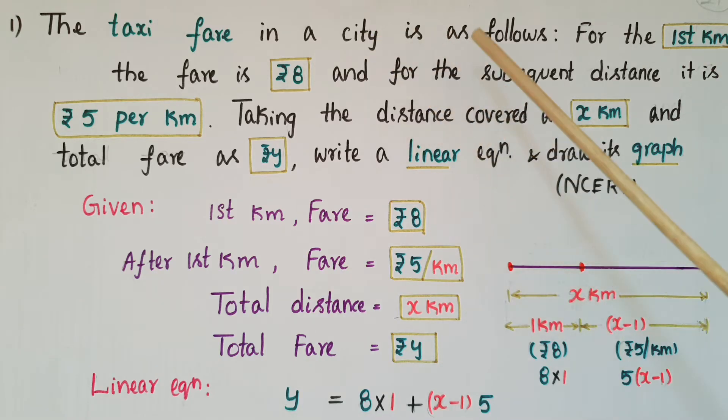The taxi fare in a city is as follows. For the first kilometer the fare is 8 rupees and for the subsequent distance it is 5 rupees per kilometer. Taking the distance covered as x kilometer and total fare as y rupees, write a linear equation and draw its graph.